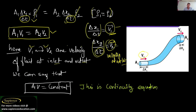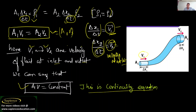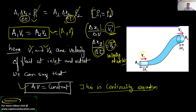If at inlet it is A1·V1 and at outlet it is A2·V2, and if there is a third section of the pipe with area A3 and velocity V3, then area times velocity is constant. This A·V equals constant is known as the continuity equation.